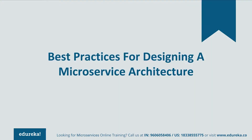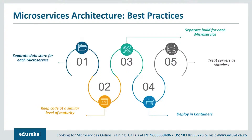Now that you've seen the real-life use case of Uber, here are some best practices to design microservices: separate the datastore for each microservice; keep the code at a similar level of maturity; build each microservice separately according to its respective features and then deploy into containers; and create the servers as stateless for communication.